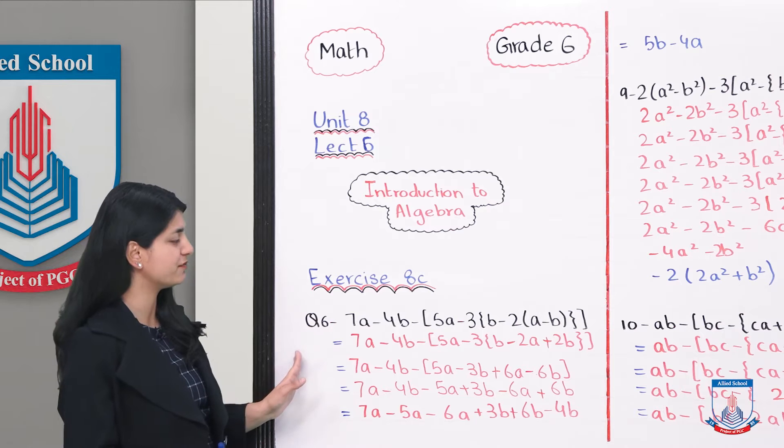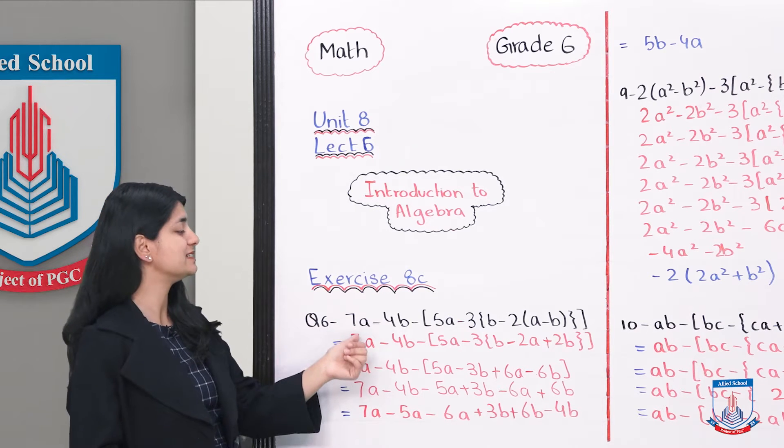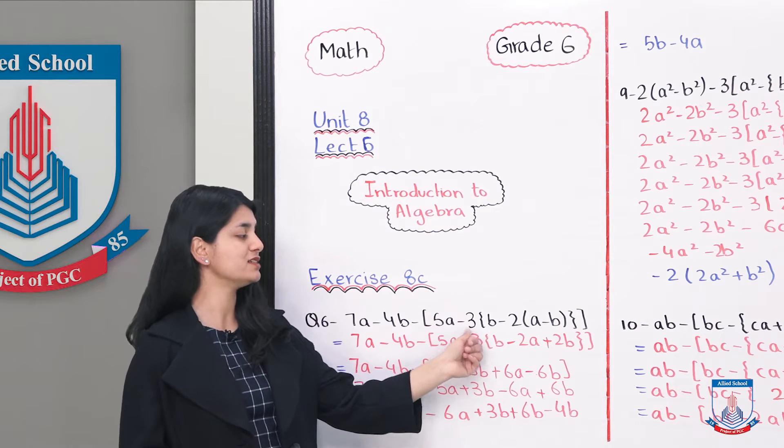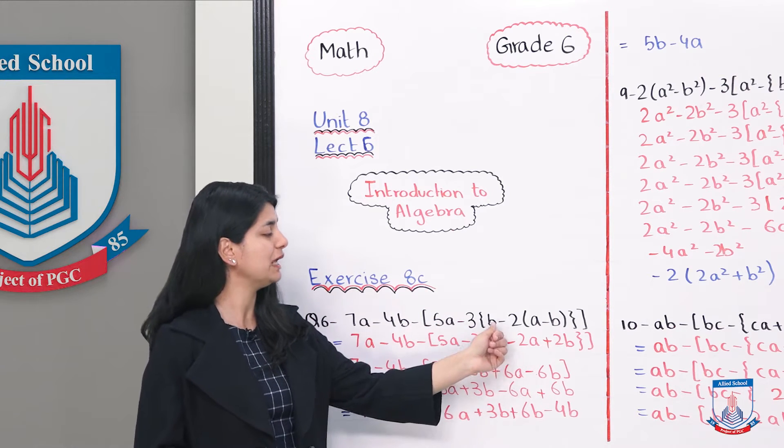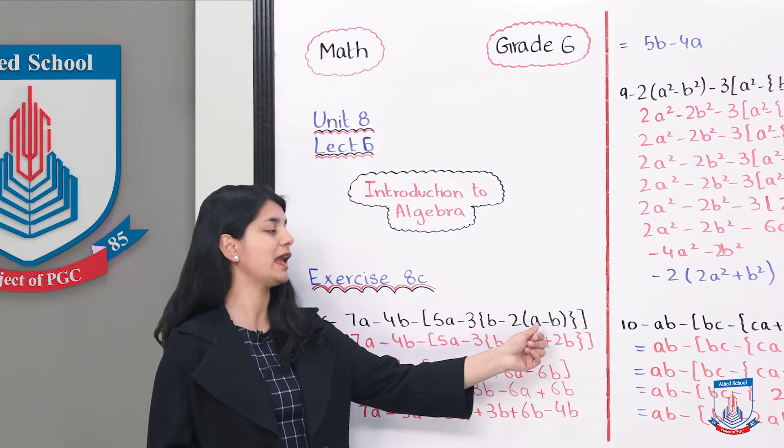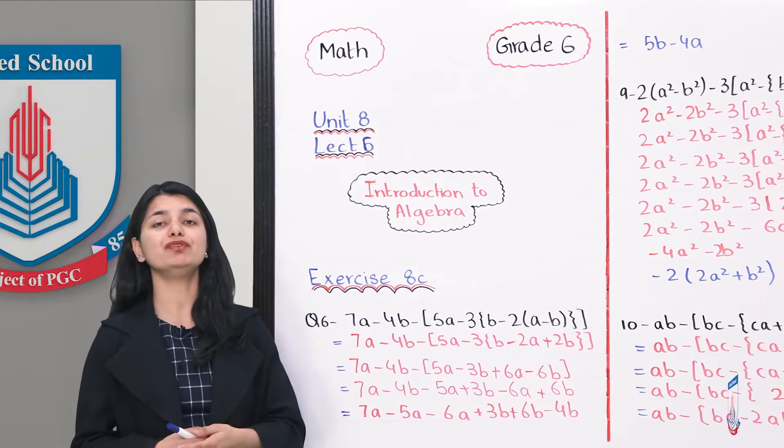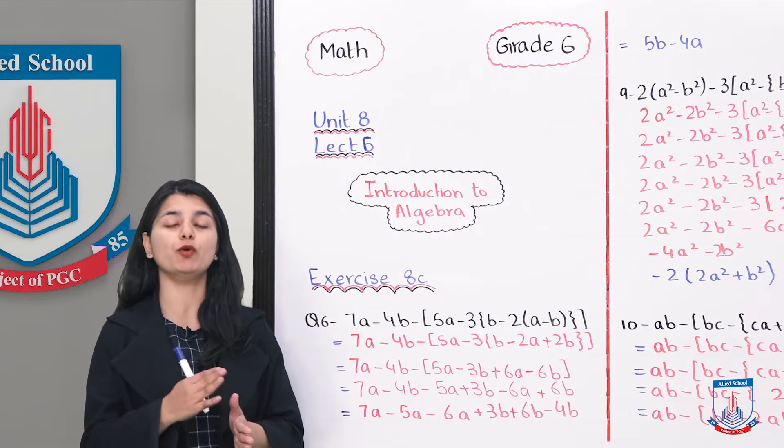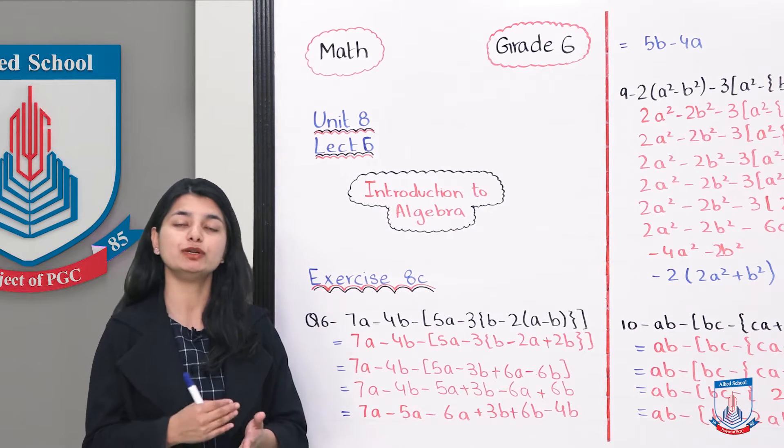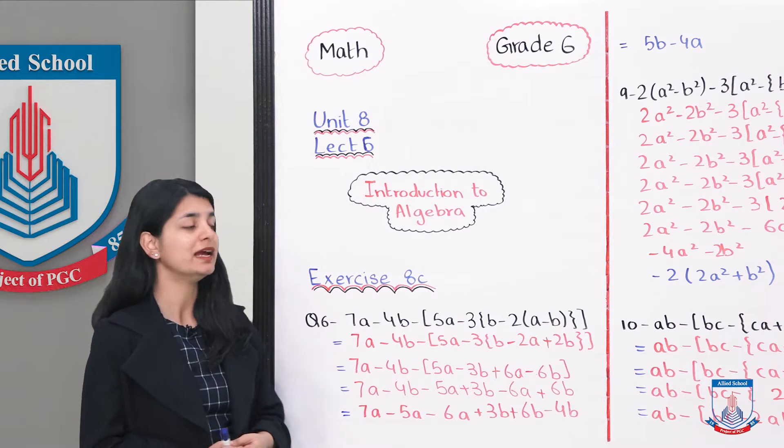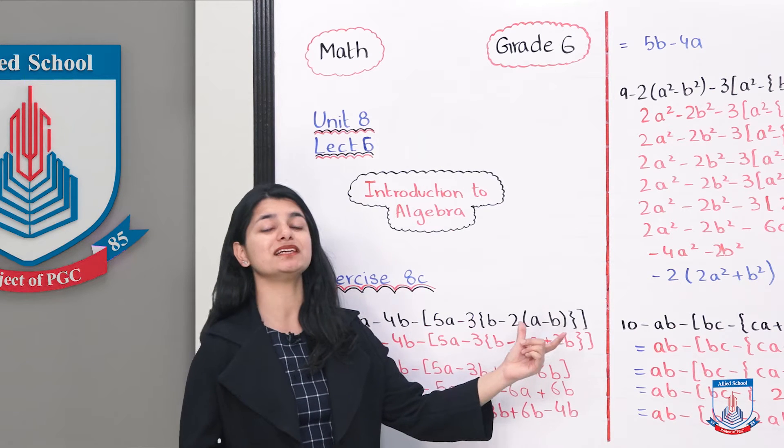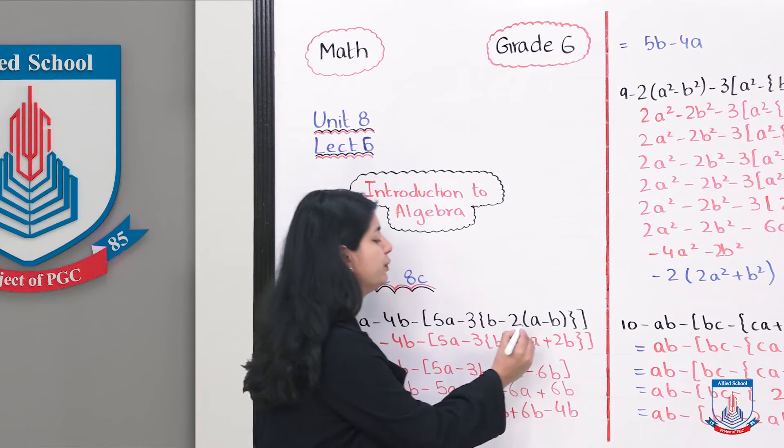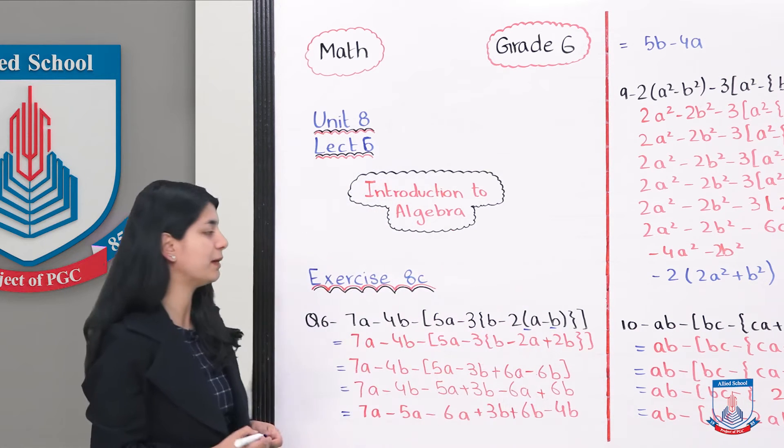Question number 6 mein they have given you an entire expression. 7A minus 4B minus square bracket. 5A minus 3 braces. B minus 2 parenthesis A minus B. What do you have to do? You have to continue solving them, opening brackets and then opening one bracket after another to simplify your expression. Sab se pehle hum dekhenge hum hain sabse internal wale bracket ko. Yahan per that is the parenthesis.